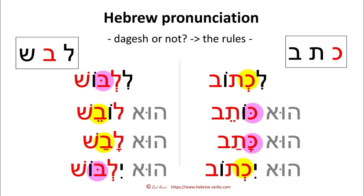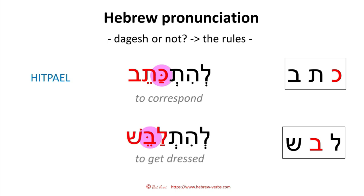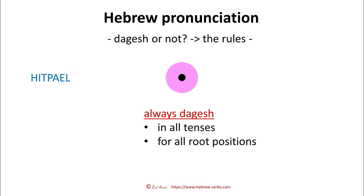When it comes to Hitpael — super easy. 'Lehitkatev', 'lehitlabesh' — there is always a dagesh when there is a chance to put one. Always, in all tenses and for all root positions. So in Hitpael there is no question, there are only answers, and the answer is always: put a dagesh when you can.